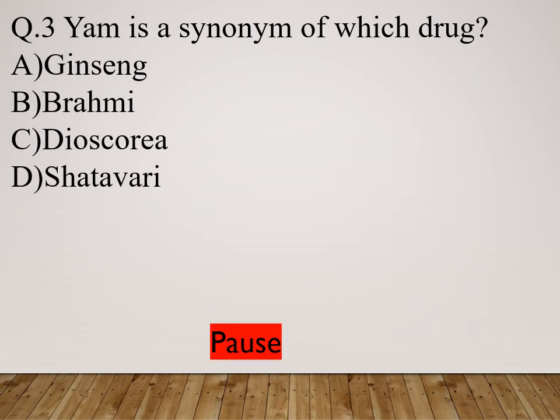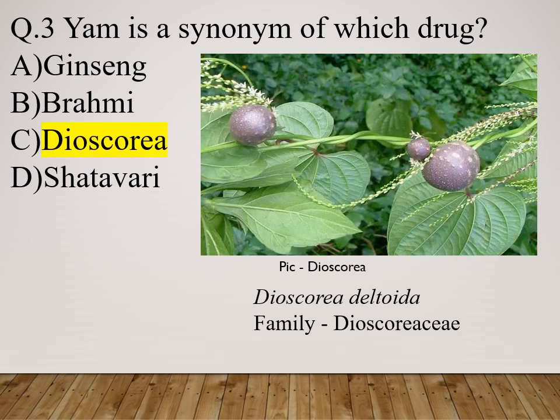Question 3: Yami is a synonym of which drug? Option A: Ginseng. Option B: Brahmi. Option C: Dioscorea. Option D: Shatavari. The right answer is Dioscorea. Dioscorea deltoidea belongs to family Dioscoreaceae.